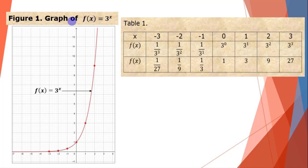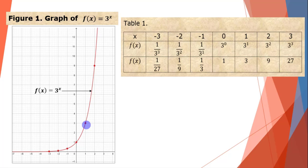Now, let's have the graph of f(x) = 3 raised to x. If x is −3, we have 1/27. If x is −2, 1/9. If x is −1, 1/3. If x is 0, we have 1. If x is 1, we have 3. If x is 2, we have 9. And if x is 3, we have 27, and so on.